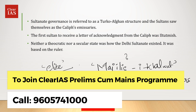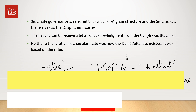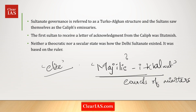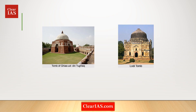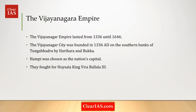In the Indian context, the Sultanate governance is referred to as the Turko-Afghan structure, and the Sultans saw themselves as the Caliph's representatives. The first Sultan to receive a letter of acknowledgement from the Caliph was Iltutmish. It is also important to note that the Delhi Sultanate was neither a theocratic nor a secular state — it depended on the individual ruler.